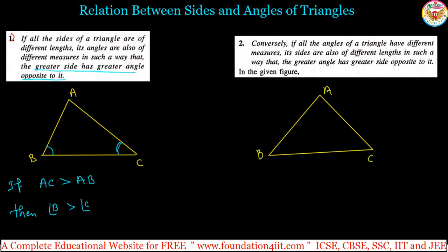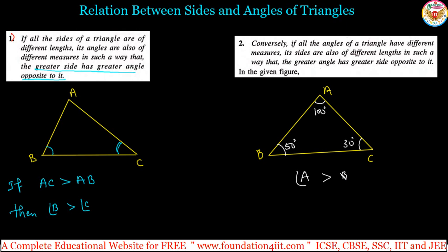The sum of the three angles is 180 degrees. Let us say in triangle ABC, angle A is 100 degrees and angle C is 50 degrees, so angle B must be 30 degrees. So approximately, angle A is greater than angle B.